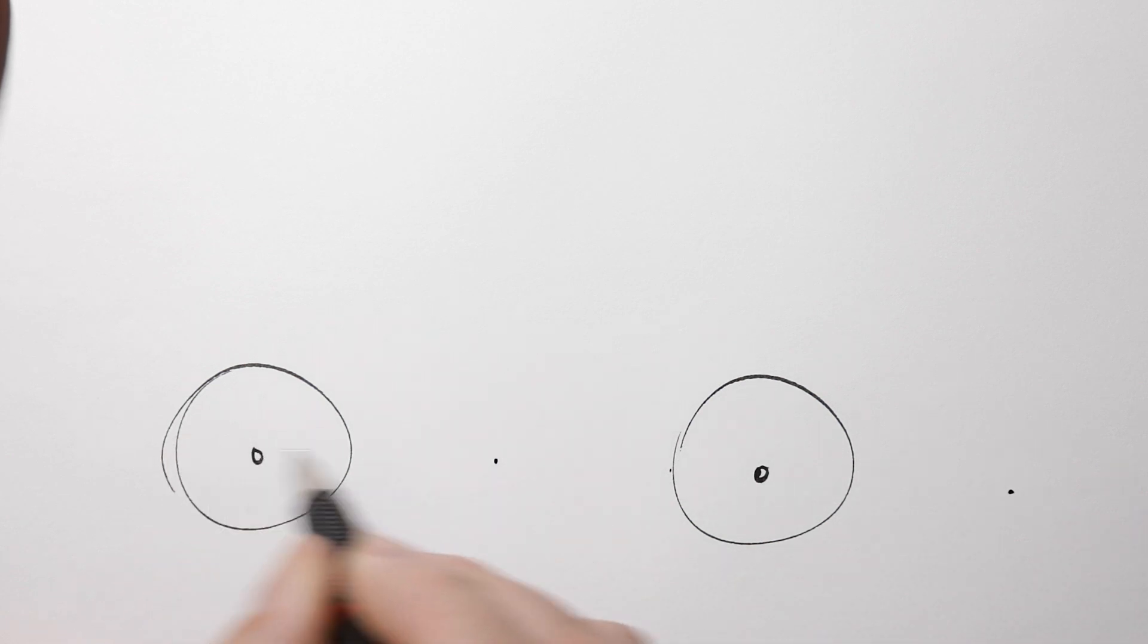So we need a line now for the chassis which runs just above the centres of the wheels from here all the way back to this end point.